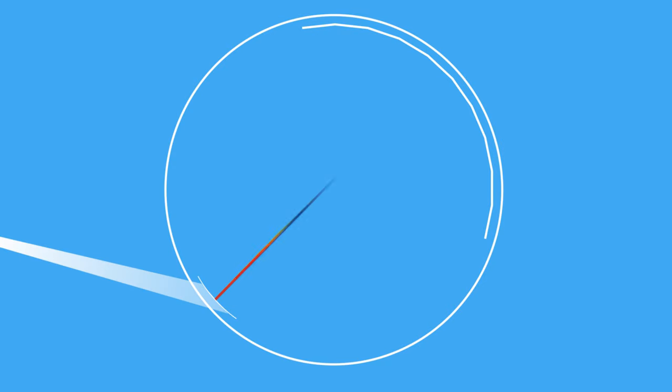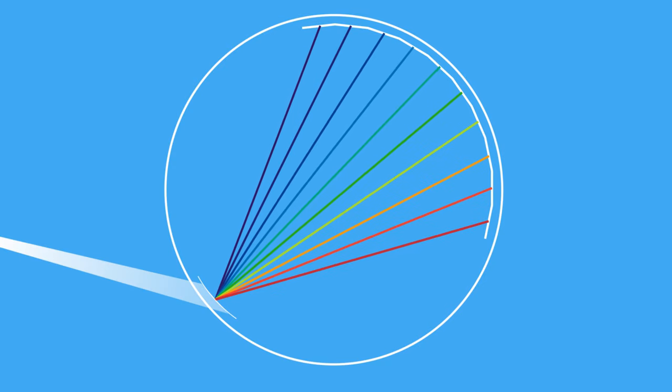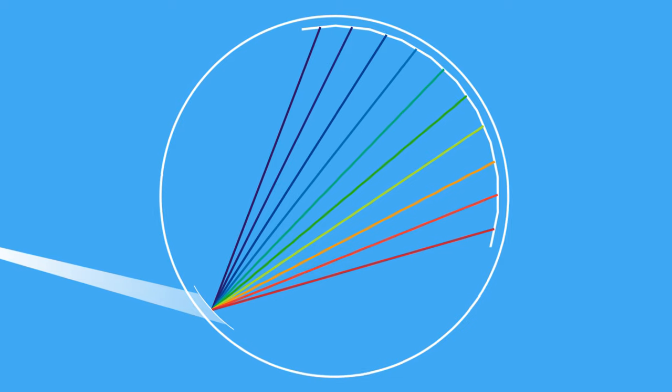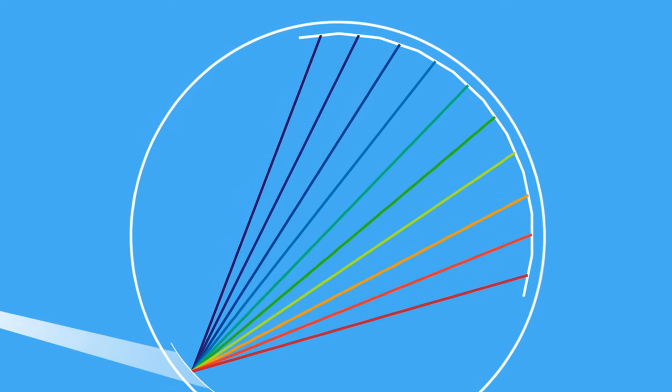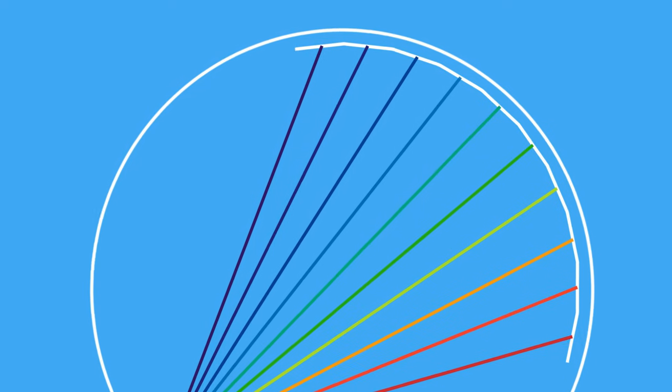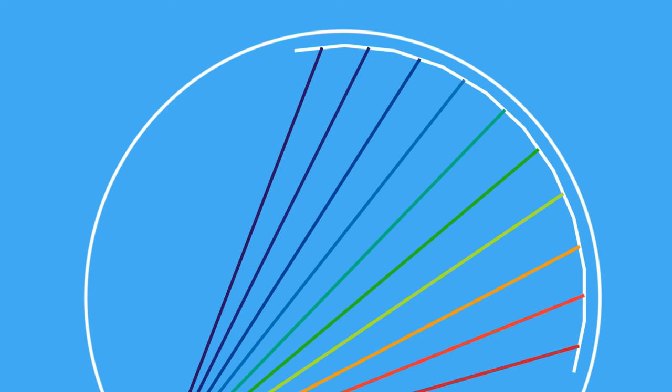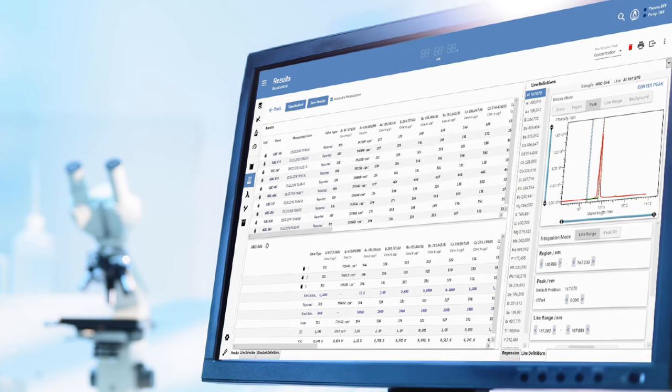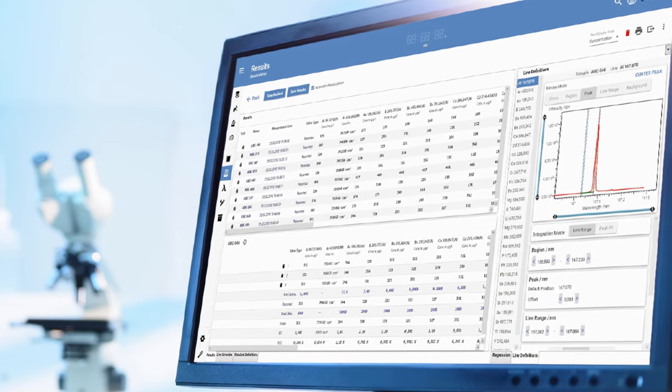The light is transferred into the high resolution, no-purge sealed optical system, which separates the light into the specific wavelengths for the elements to be measured. As these wavelengths strike the detector array, light intensities for each different wavelength are quantified and sophisticated software converts them into concentration units.